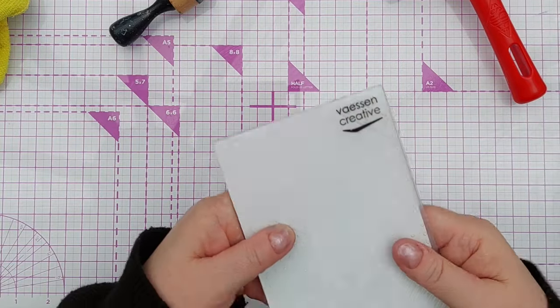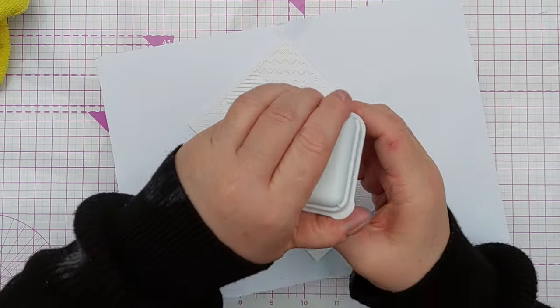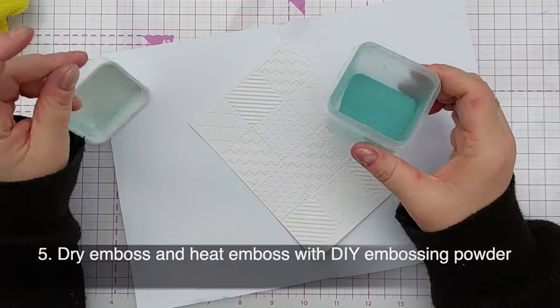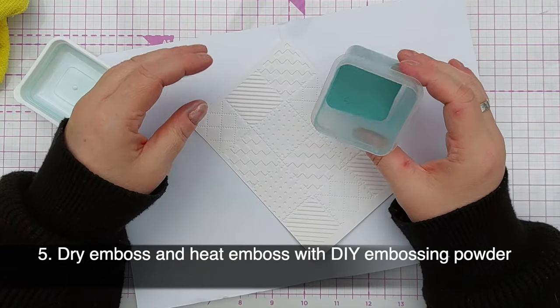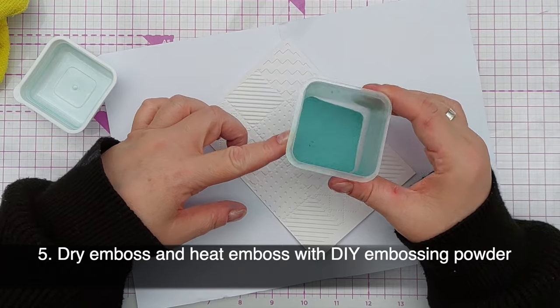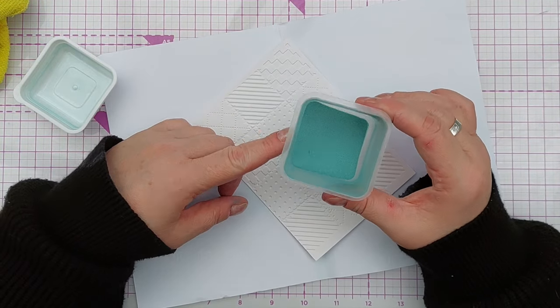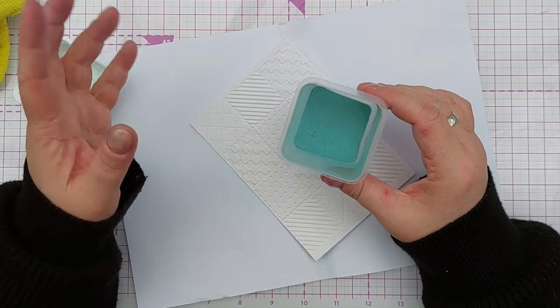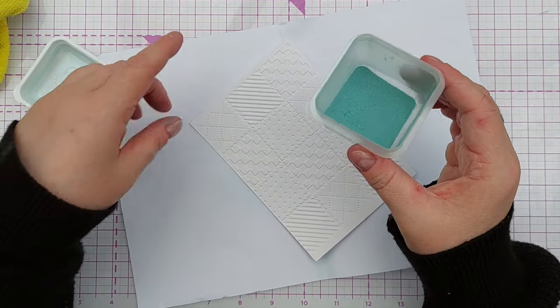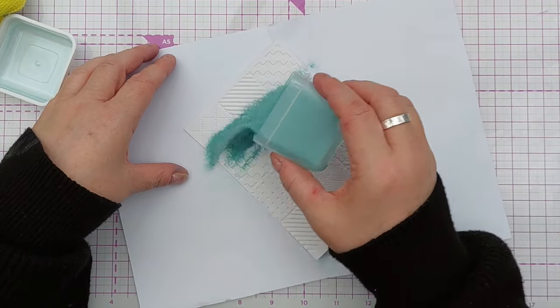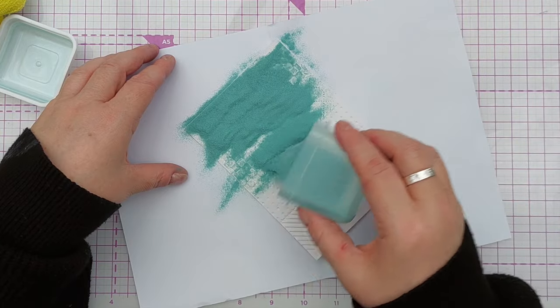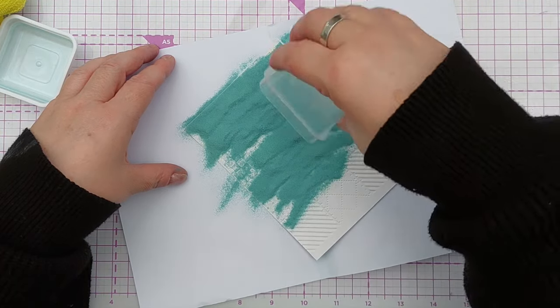Now I'm going to put that through my Cuttlebug. And this is my homemade embossing powder which I made using clear embossing powder and green Luscious powder. There's a whole video on how to make your own embossing powders with pigment powders, so check that out.